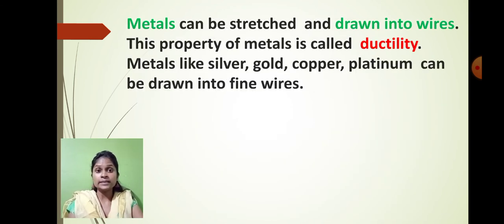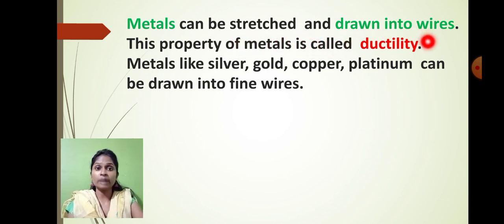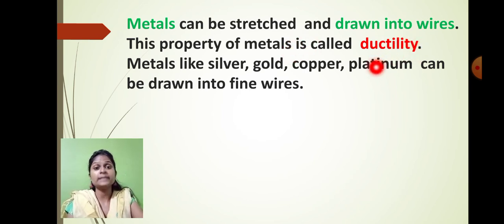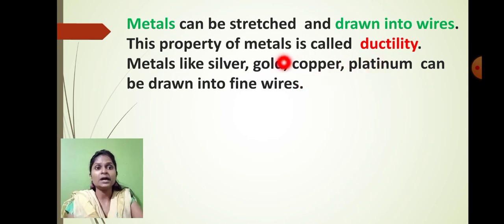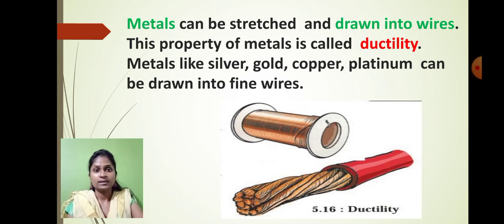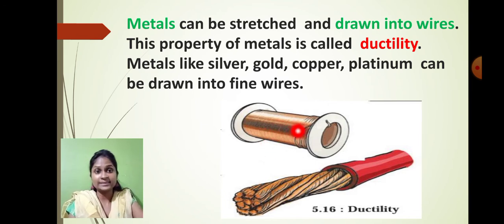Most of the time you must have seen that metals can also be stretched and drawn into wire. If we stretch a metal and it can be converted into a wire-like structure, this property is called ductility. Metals like silver, gold, copper, and platinum can be drawn into fine wire-like structures and this property is called ductility. Can you see this copper wire? This copper has been converted into a wire-like structure — this property is called ductility.